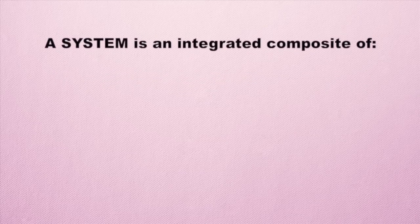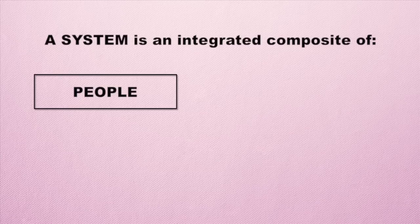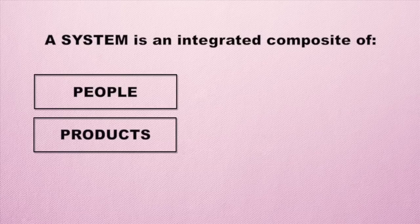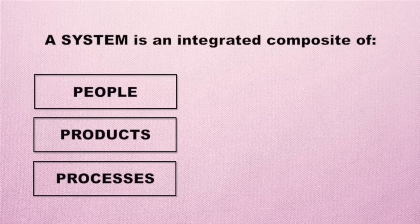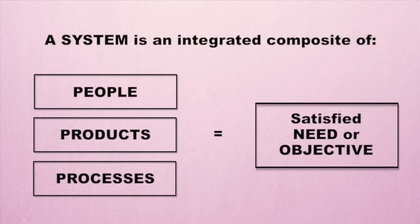A system is an integrated composite of people, products, and processes. People in system engineering means all your discipline engineers — thermal engineers, power engineers, and a variety of people involved in a system. Sometimes people think of a system as just the product — the actual physical hardware and software you're going to develop — but the people are just as important. All three of these are key to putting together a system engineering process and managing a system development activity, combined to satisfy some need, goal, or objective set out for the system.